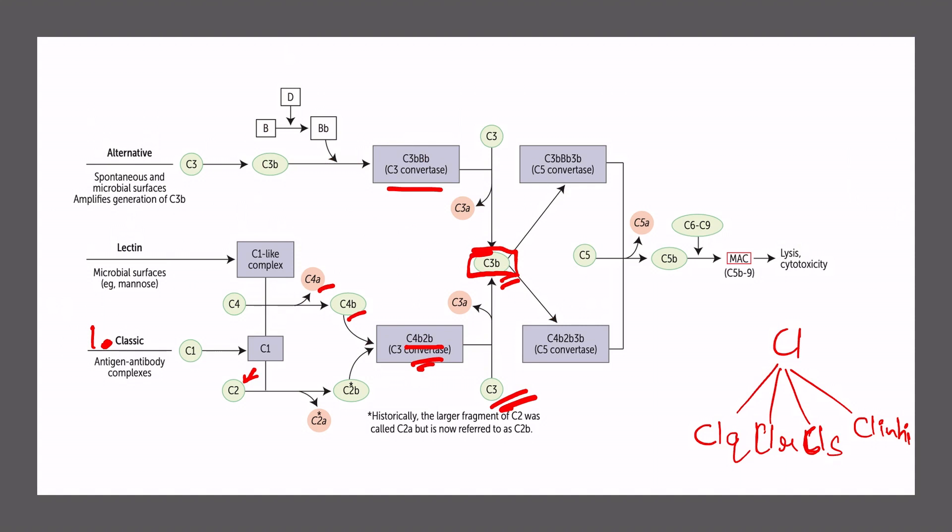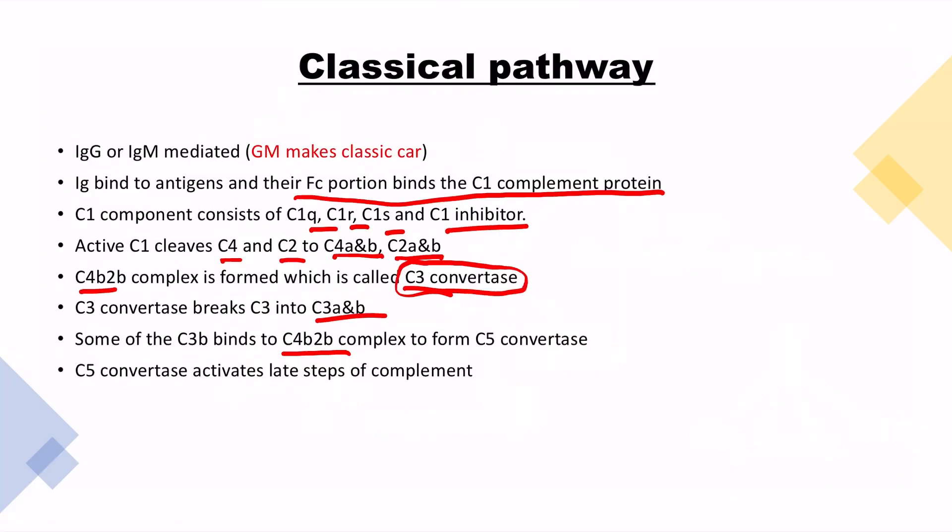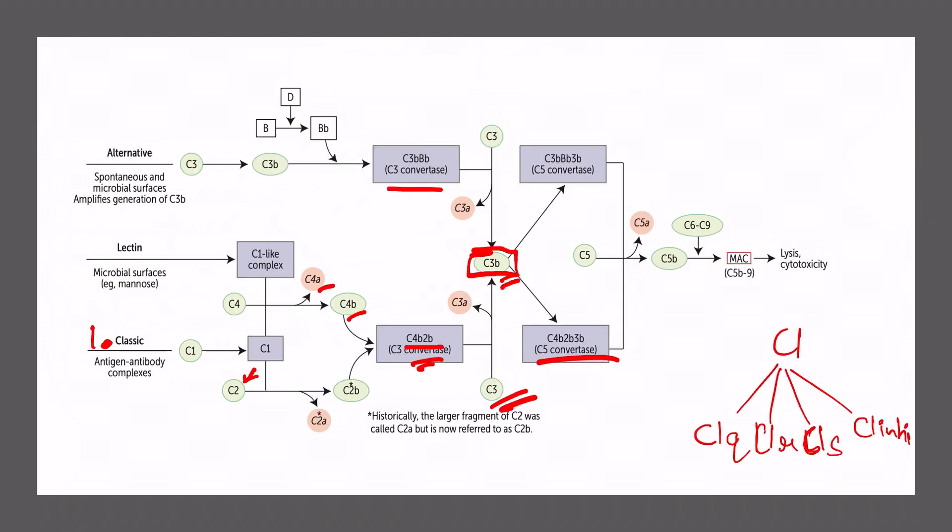This C3B can bind to the complex C4B2B to form C5 convertase. C5 convertase activates the last step of the complement. As soon as we make the C5 convertase, it goes and cleaves C5 to C5A and C5B. C5B with the insertion of C6 to C9 complement pathway is what makes the MAC complex that leads to lysis and cytotoxicity. You have to remember that this is immunoglobulin mediated: IgG or IgM.